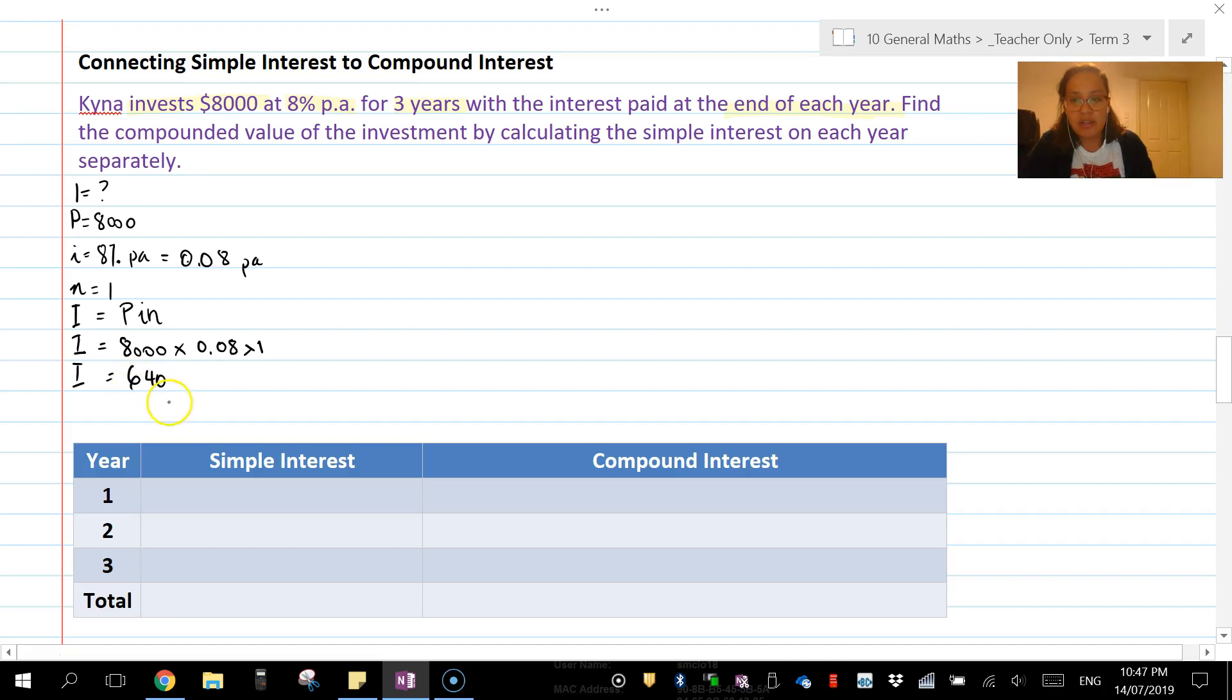We fill those in because it's saying at the end of each year. Each time we do simple interest: $640, $640, $640.